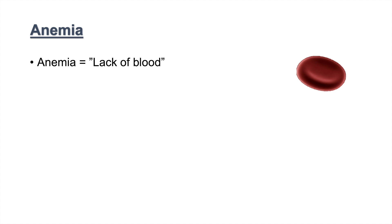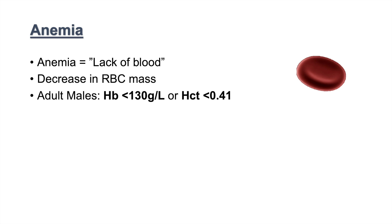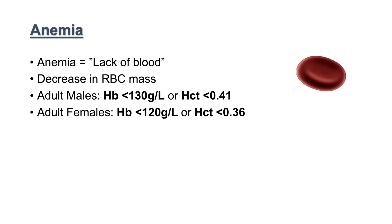Well if we look at the word anemia, it literally means lack of blood. But really the definition of anemia is that it is a decrease in red blood cell mass. In adult males, anemia is defined as a hemoglobin less than 130 grams per liter or a hematocrit of less than 0.41. In females, it's when hemoglobin is less than 120 grams per liter or hematocrit is less than 0.36. Those indicators are how we determine if adult males or females have anemia.